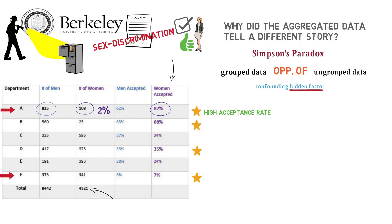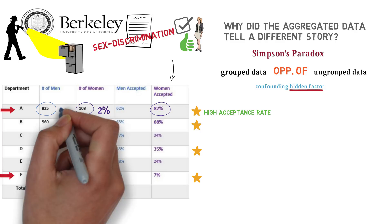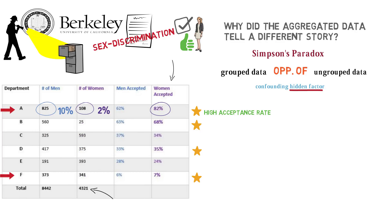On the other hand, 825 of the men applied to this department—that's 10% of all male applicants. You may have already spotted the mischief, but let's go on. Take a look at the last row. You'll notice that Department F has an extremely low acceptance rate, especially in contrast to Department A.